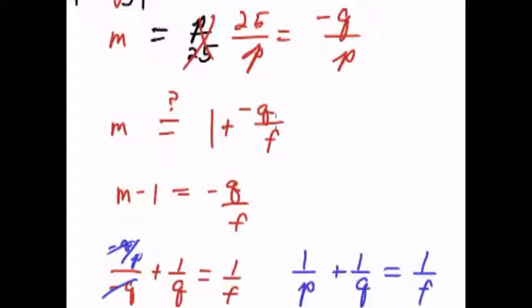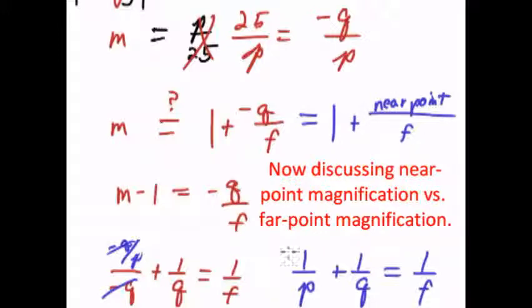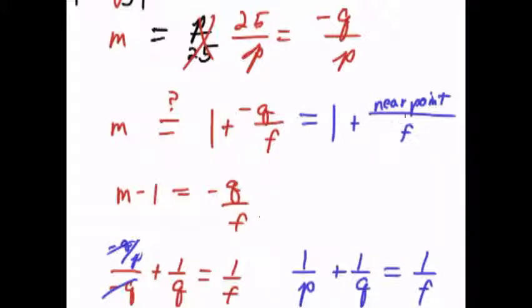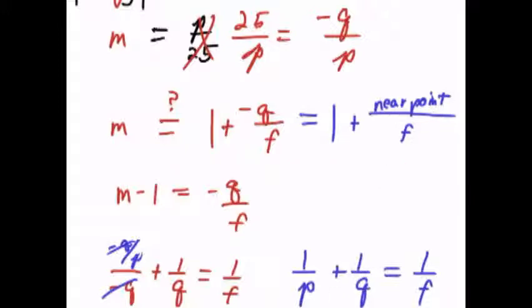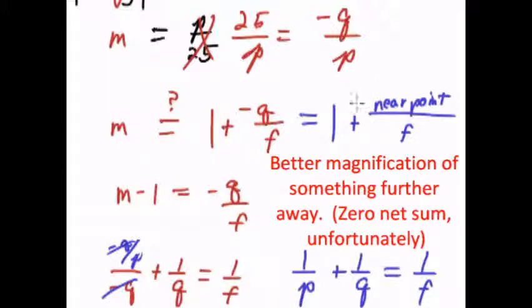If the magnification is 1 minus q over f, which is 1 plus the near point divided by f, I guess the point is we want to make this focal length as short as possible. Make the focal length as short as possible and that will give us the largest magnification. And the bigger your near point, the worse the magnification, or the better the magnification you can get. But that's only because you have to put the object further away from your eyes. So it's not really that great of a trade-off.